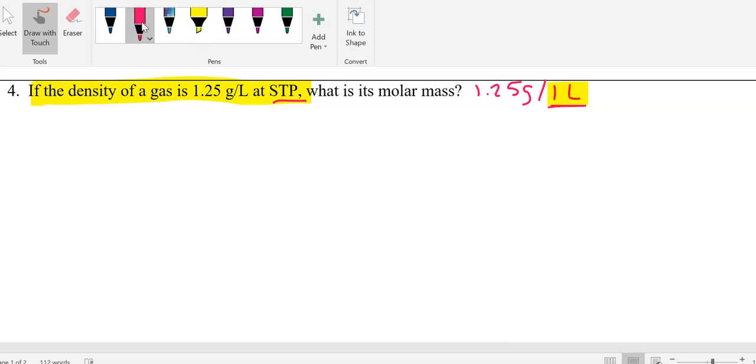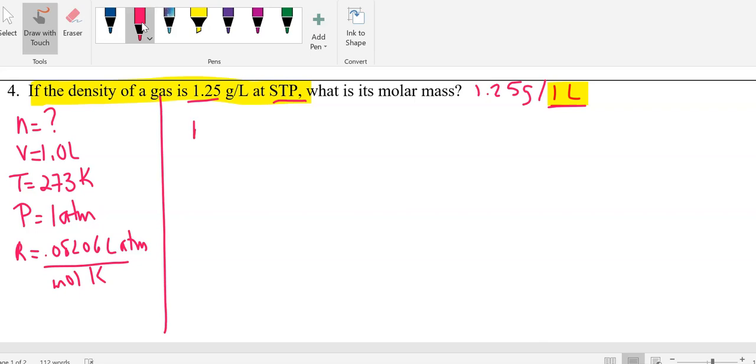M is going to be our question mark. Volume is going to be 1 liter. Temperature is standard temperature, which is 273 Kelvin. Pressure is standard pressure, so 1 atm. We don't need to worry about units here. Sig figs, the only sig figs that's going to matter is the measurement we were given. And our R is still 0.08206 liter atmospheres per mole Kelvin. So now, M is PV over RT.